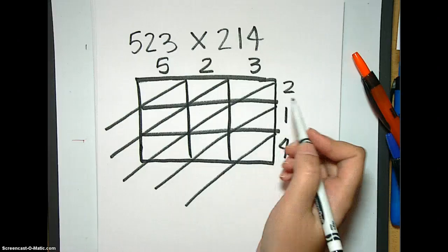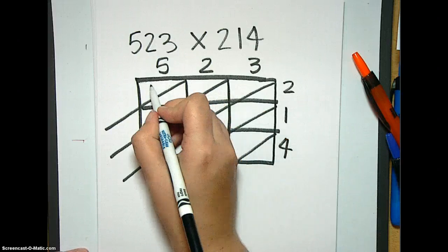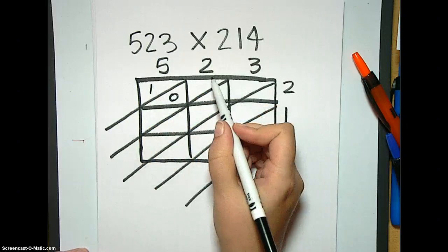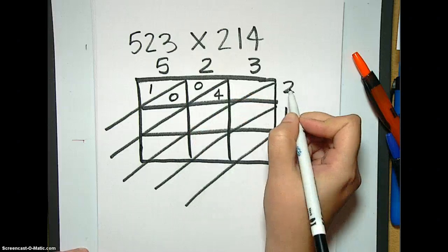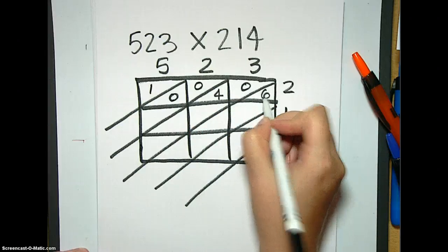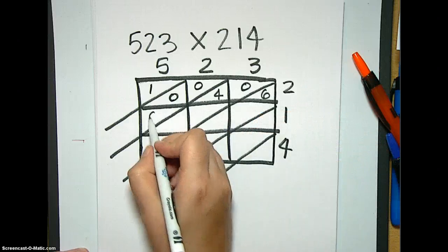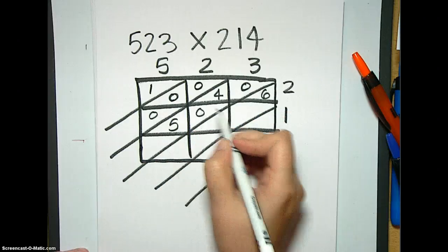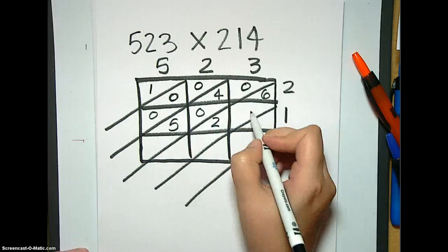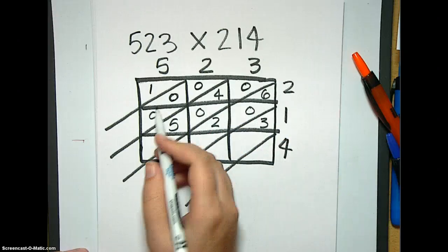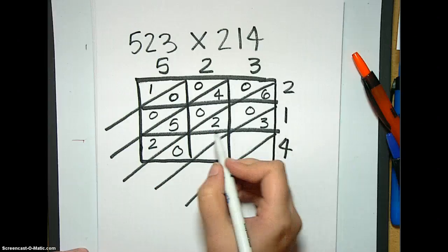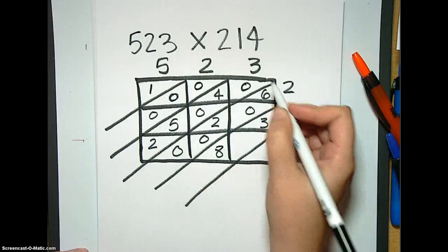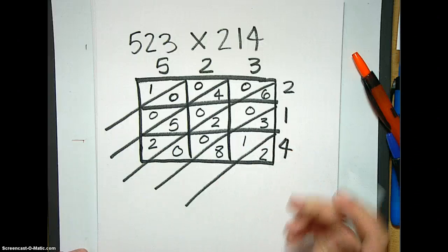So five times two, there's our five and there's our two is ten. Put our one here and our zero here. Two times two is four. Put our zero here and our four here. Three times two is six. Five times one is five. Two times one is two. Three times one is three. Five times four is 20. Two times four is eight. And then three times four is 12. So we filled in that pretty quickly.